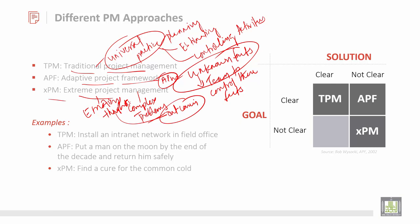Examples are given here. TPM is used to install an internet network in a field office. APF means putting a man on the moon by the end of the decade and returning him safely — planning with unknown facts but done in a very effective manner. The Extreme Project Management example is finding a cure for the cold, which is truly flexible.